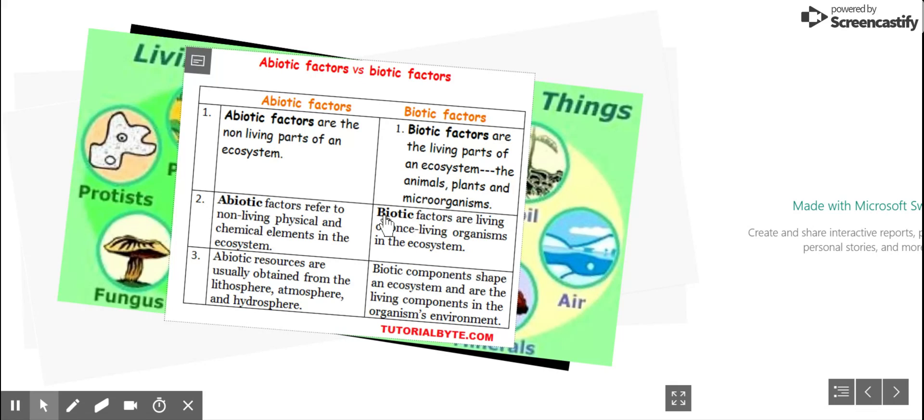Remember, abiotic factors are the non-living parts of an ecosystem. Abiotic refers to non-living physical and chemical elements in the ecosystem. Abiotic resources are usually obtained from the lithosphere, the atmosphere, and the hydrosphere.